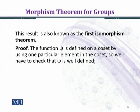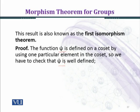To prove the fundamental theorem of homomorphism, we first have to establish that psi is well-defined, one-to-one, onto, and a homomorphism. The function psi is defined on a coset by using one particular element in the coset, so we have to check that psi is well defined.